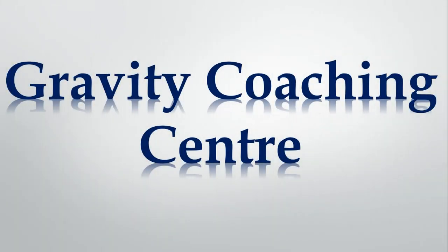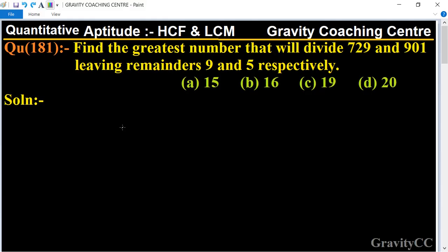Welcome to our channel Gravity Coaching Center. Quantitative Aptitude, Chapter HCF and LCM. Question number 181: Find the greatest number that will divide 729 and 901 leaving remainders 9 and 5 respectively. This question is a simple one.